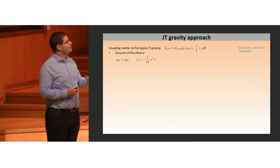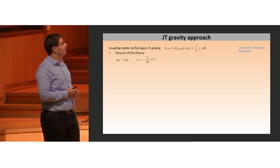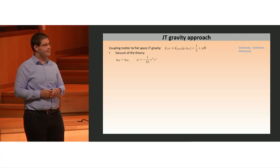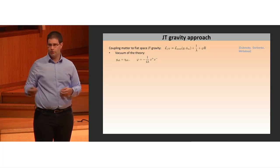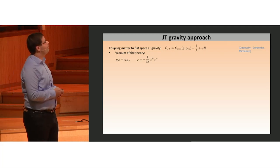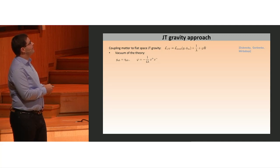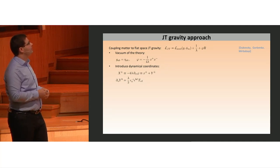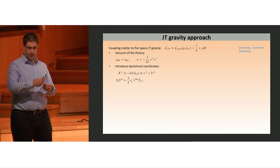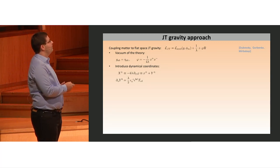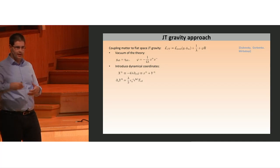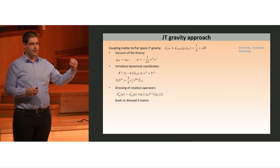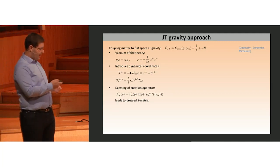One shortcoming of the QFT discussion was that we didn't really have a closed-form Lagrangian. Dubovsky, Gorbenko, and Mirbabayi proposed such a closed-form Lagrangian in terms of coupling the seed theory to Jackiw-Teitelboim gravity in flat space. There's a cosmological constant proportional to the inverse lambda. The vacuum of this theory is Minkowski space with a funny dilaton profile. This motivates introducing dynamical coordinates as a gradient of the dilaton. Let me denote by Y the deviation of these dynamical coordinates from the vacuum. These Ys obey an equation of motion with derivatives related to the stress tensor of the seed theory.